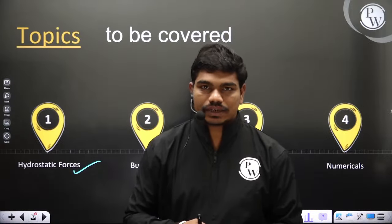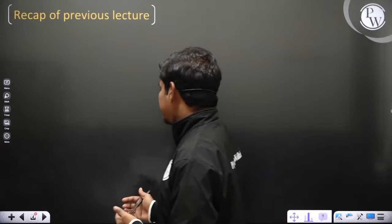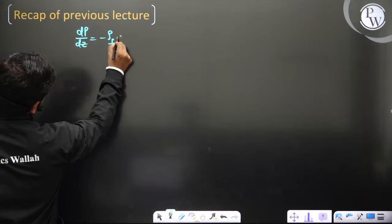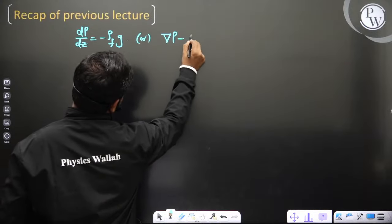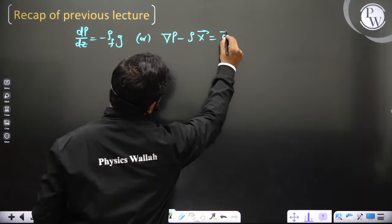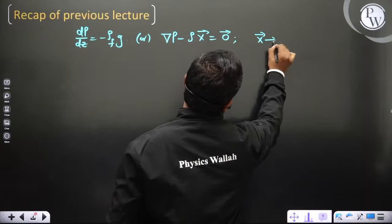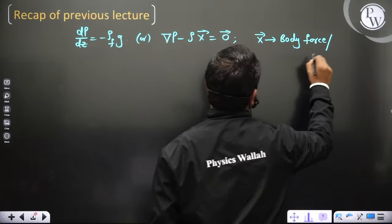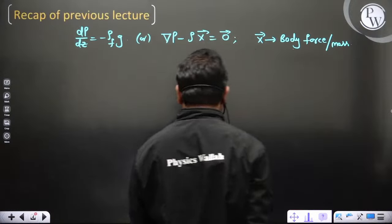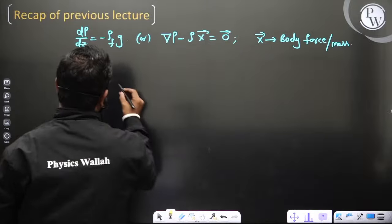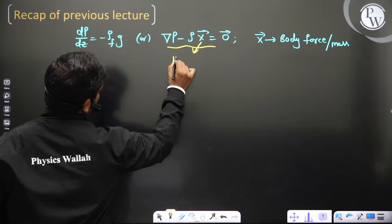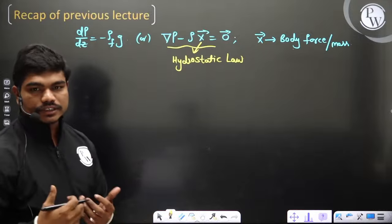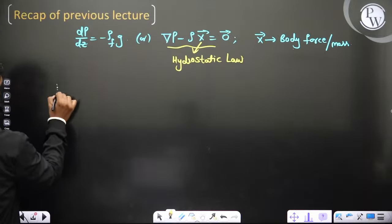Last lecture we saw the hydrostatic law - in vector form: gradient of pressure minus density times X-bar equals zero, where X-bar is body force per unit mass, equal to minus g. Based on this hydrostatic law we talked about pressure variations in different fluids.